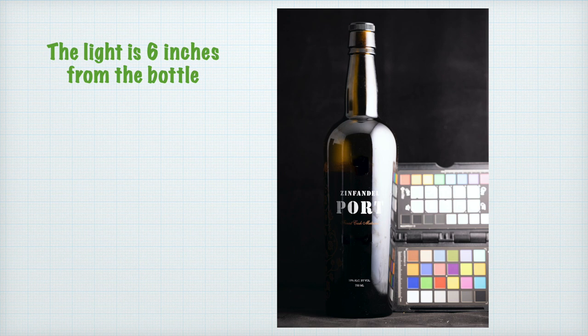When I set the light at 6 inches away from the bottle, the overall scene gets overexposed. The inverse square law tells us that with the light at half the distance, the true tones or diffused tones — the subject itself — will be approximately 2 stops or 4 times brighter, which we see here.